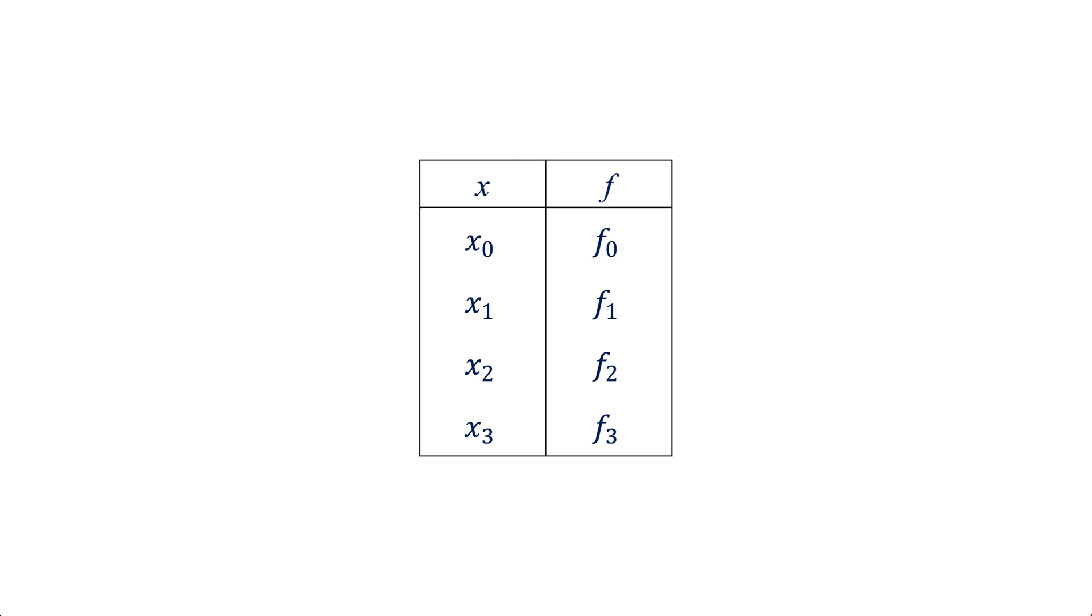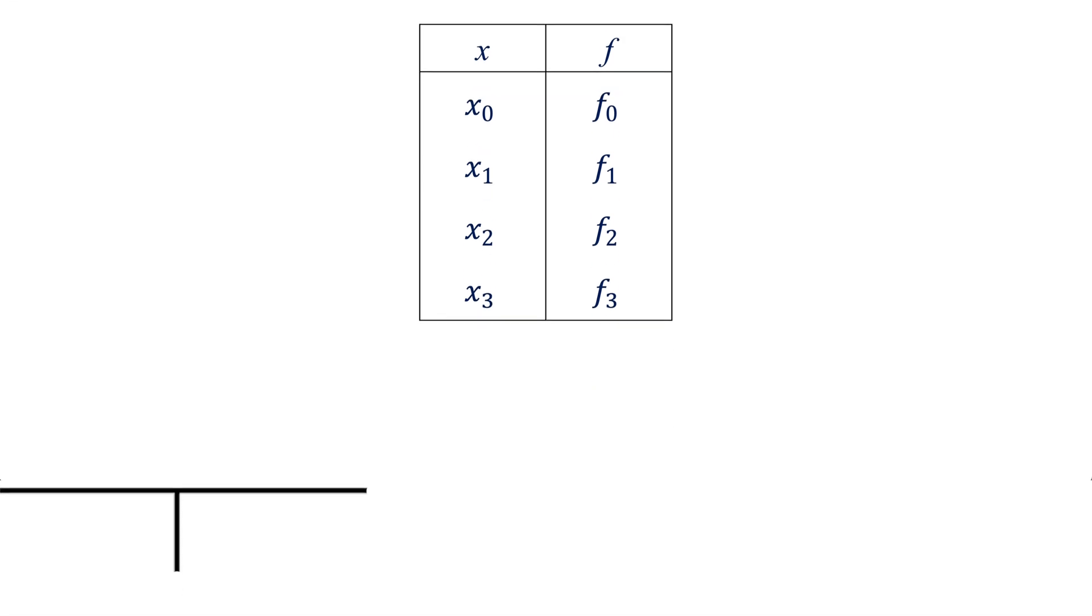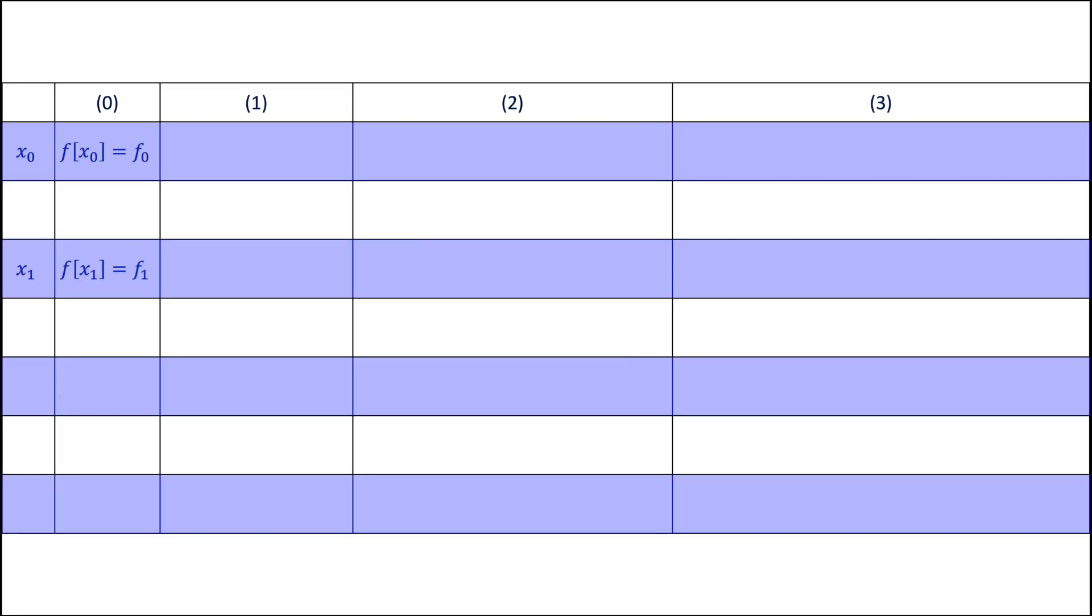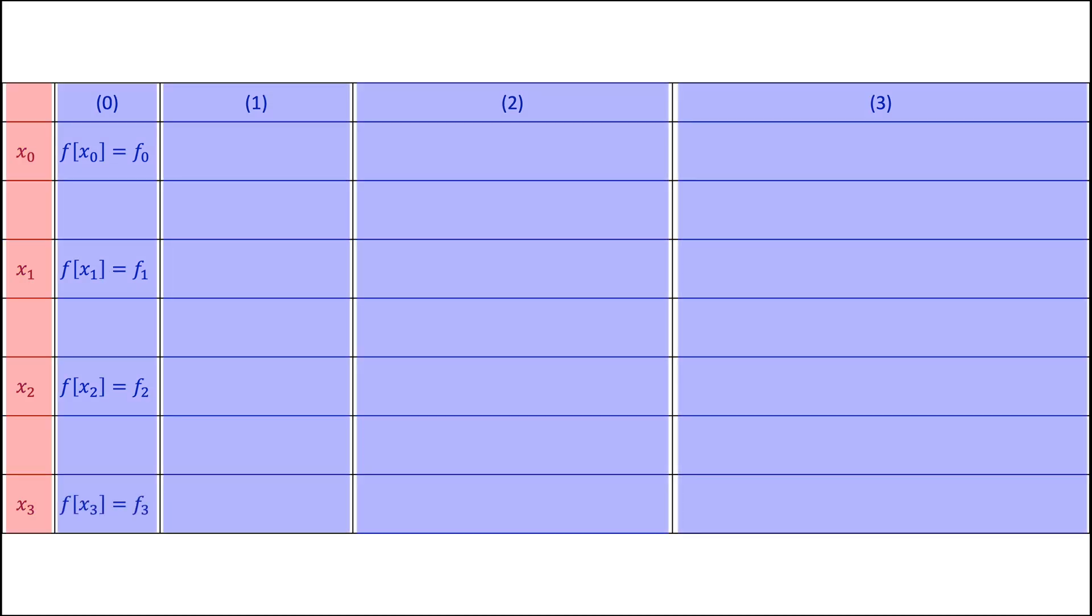Let's consider the example of four data pairs of x and f and see how to construct the divided differences table step by step. The number of rows in the table should be equal to the number of data points, while the number of columns is equal to the number of rows plus one additional column at left for x values.